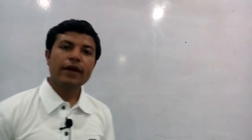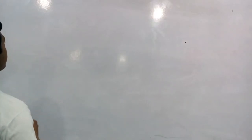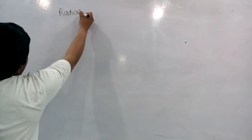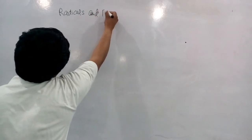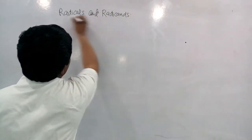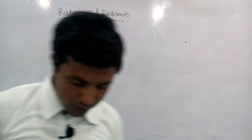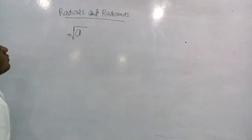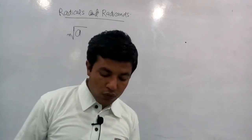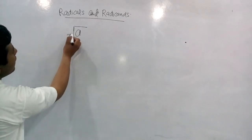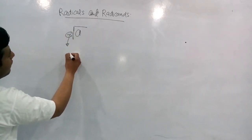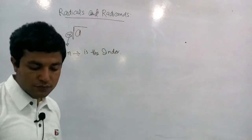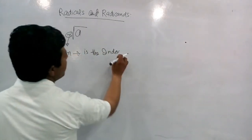Now radicals and radicands. For example ہم ایک general form لیتے ہیں: n-th root of a. اس میں n کو ہم index کہتے ہیں - n is the index of the radical. اور یہ جو symbol ہے this is called the radical symbol.